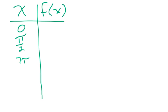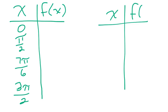So, here's my table. I'm going to say x, f of x. So, I want 0. I want pi over 2. I want 7 pi over 6. I want 3 pi over 2. I'm going to make it into two tables. x, f of x. And, I'm going to say, I also want 11 pi over 6. And, 2 pi.